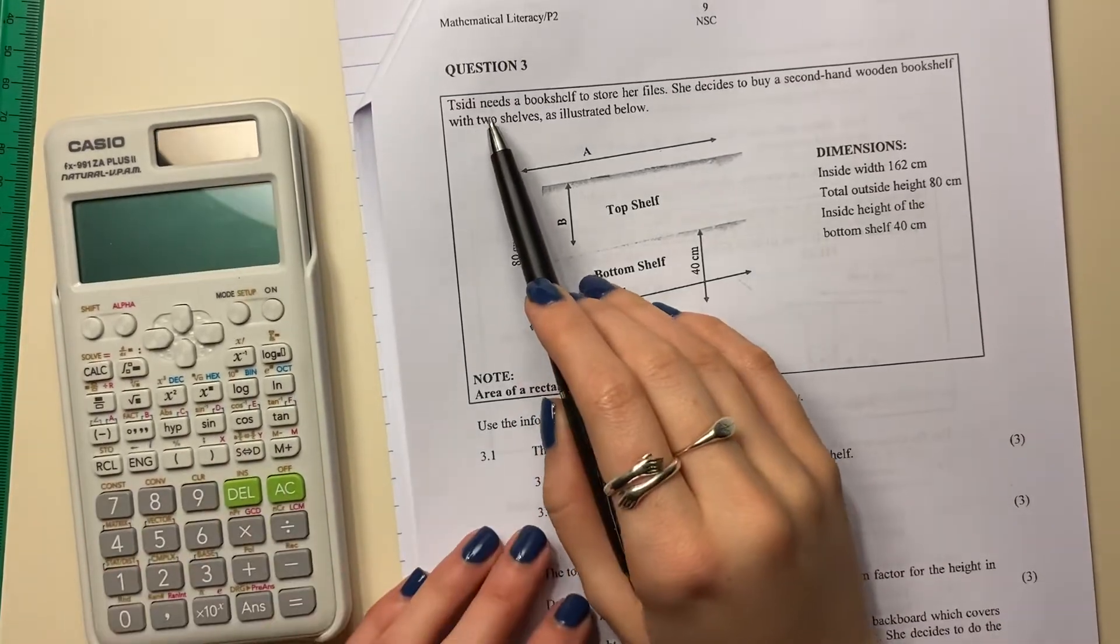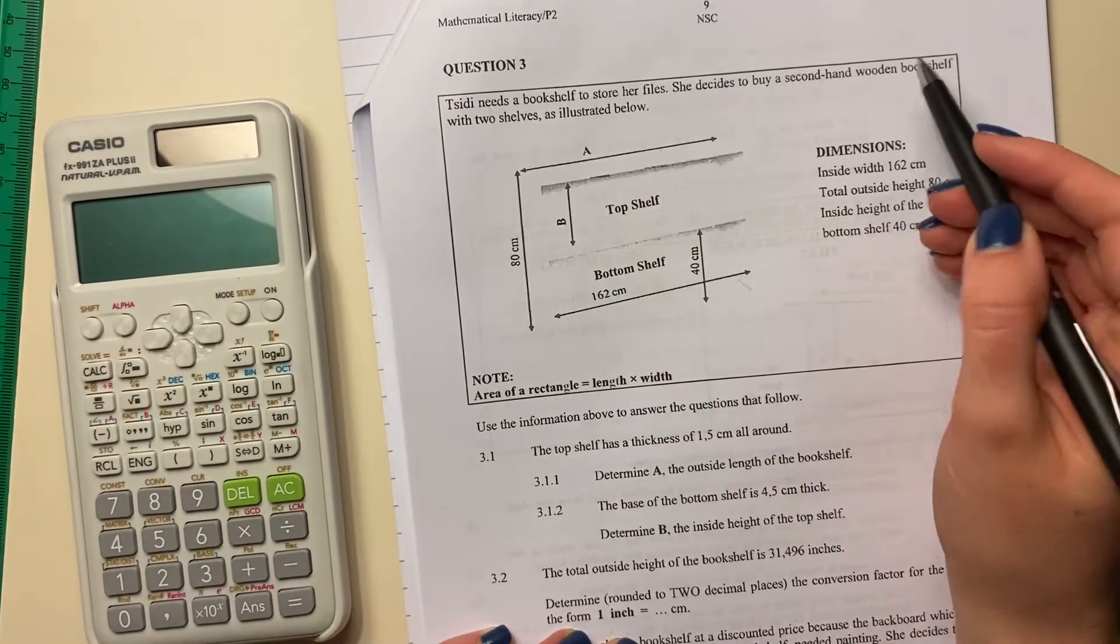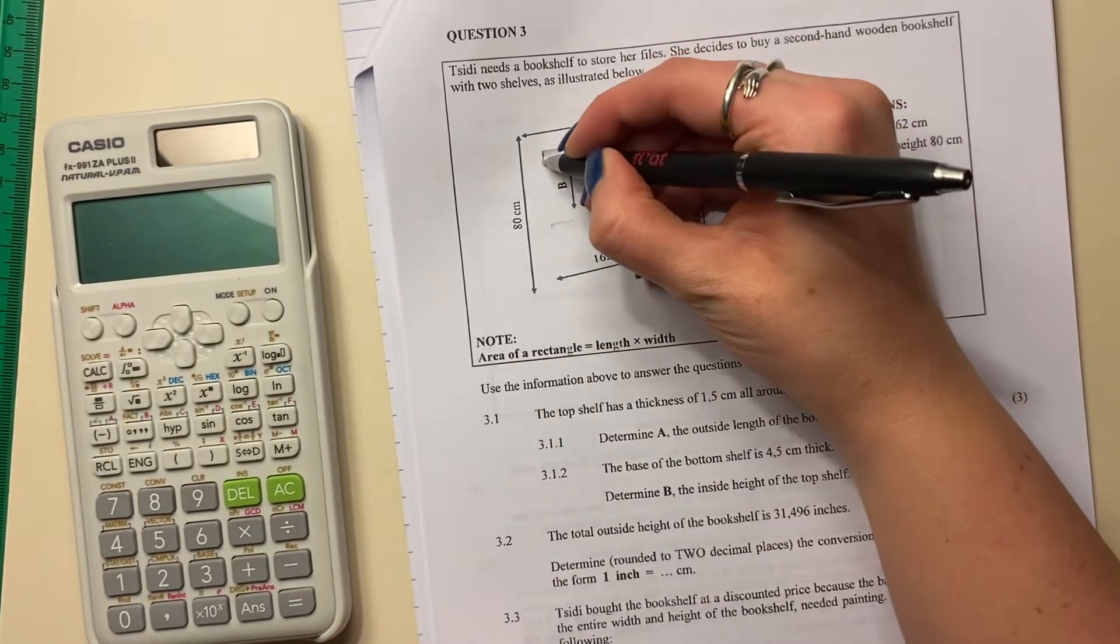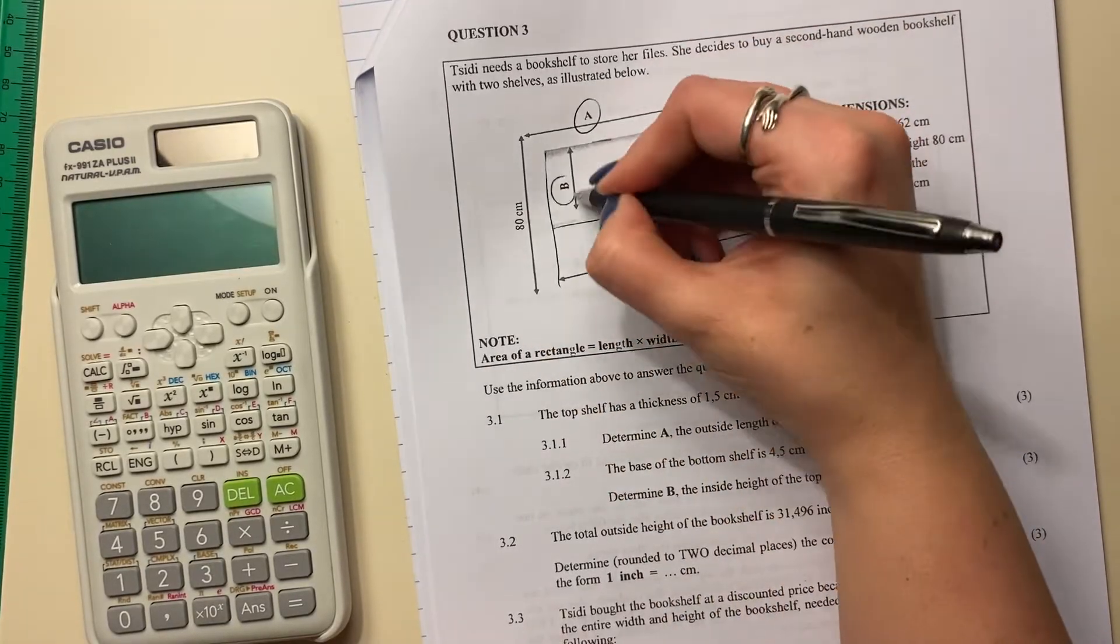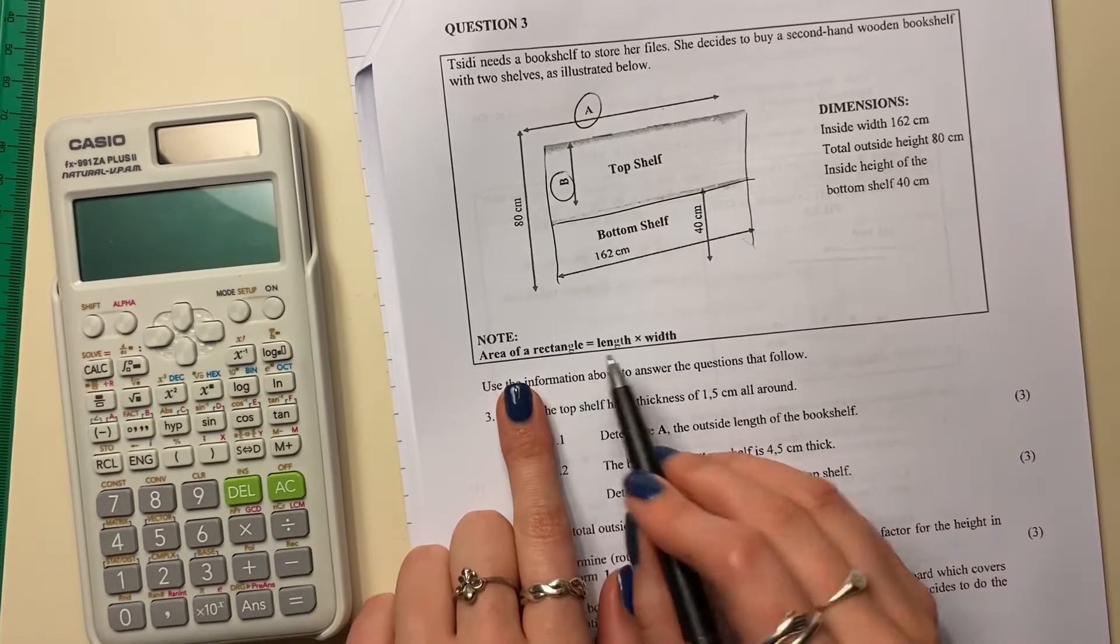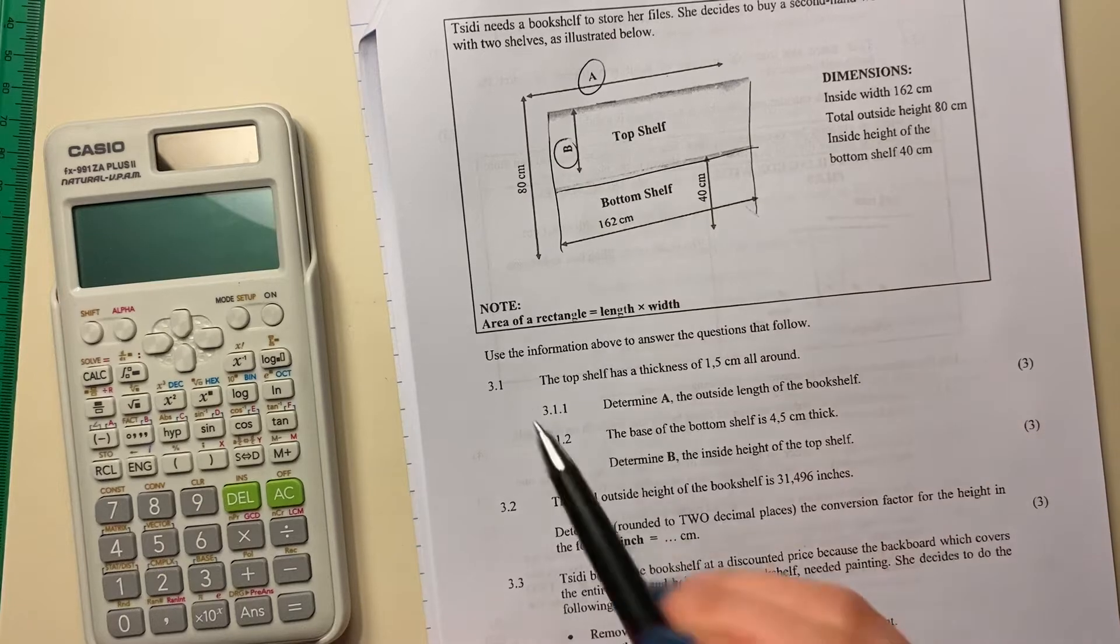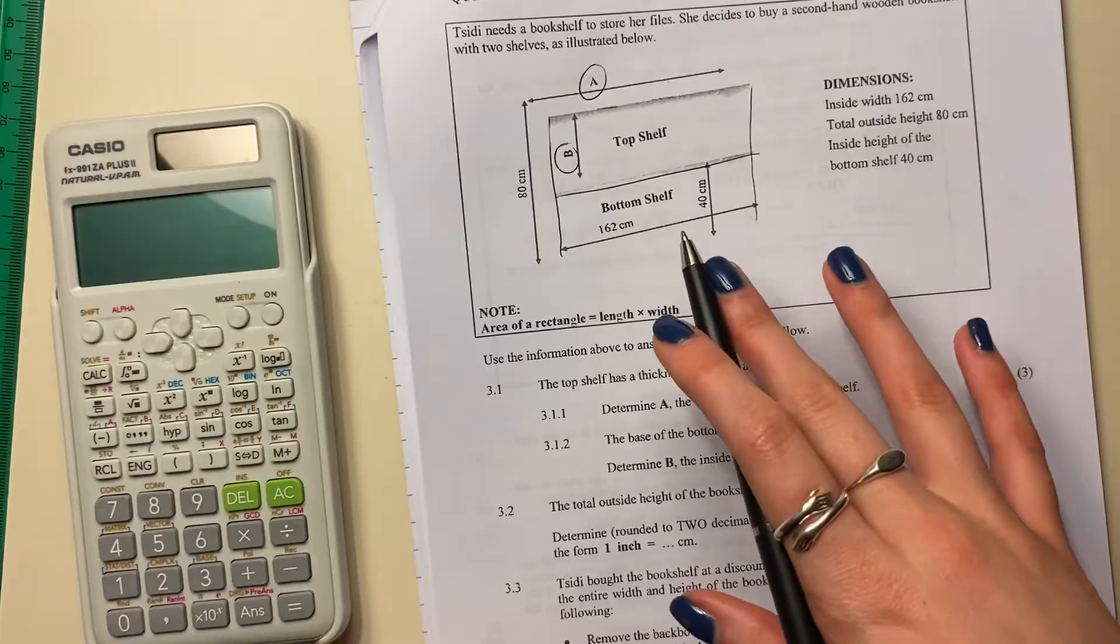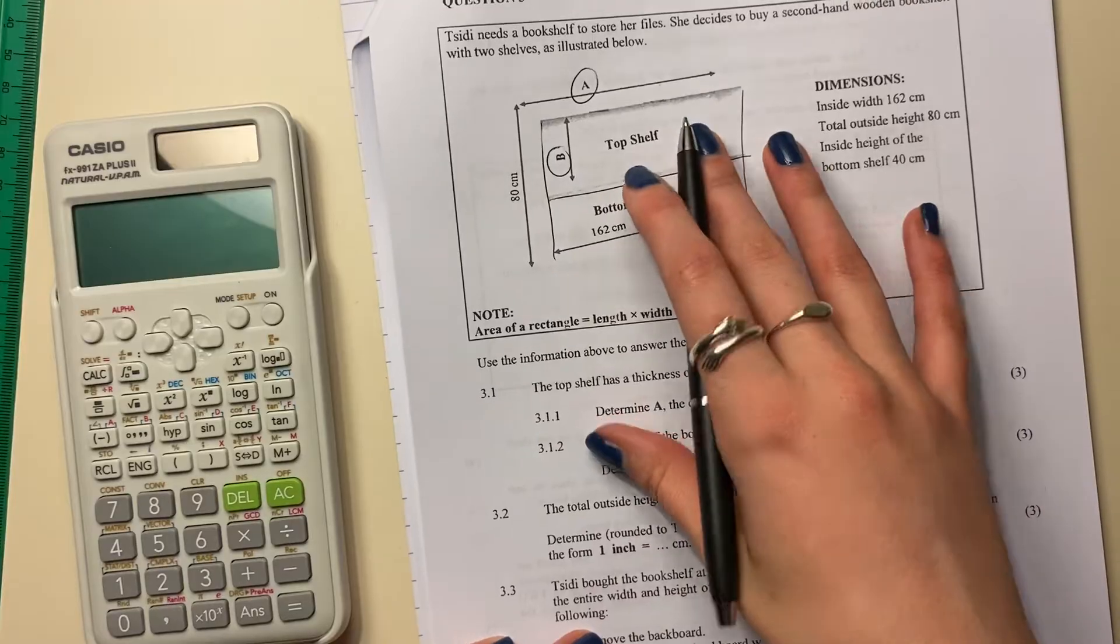Question 3. Citi needs a bookshelf to store her files. She decides to buy a second-hand wooden bookshelf with two shelves as illustrated below. So you would have seen that I haven't spent too much time on the information. The reason being is that often, if you just go read the questions, it helps you understand the information and know what information to use.